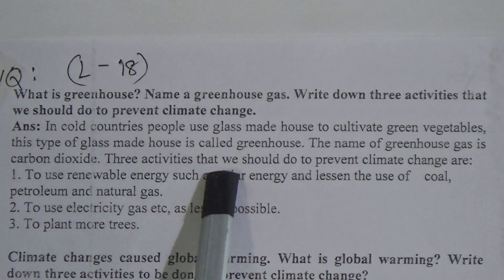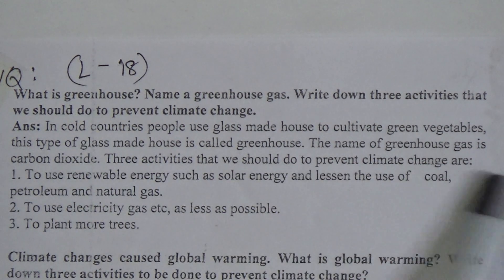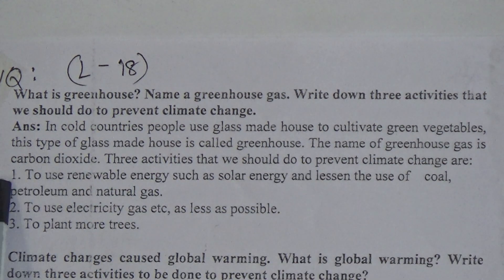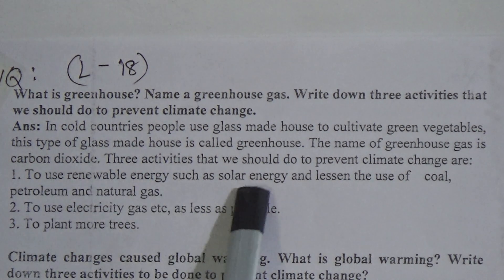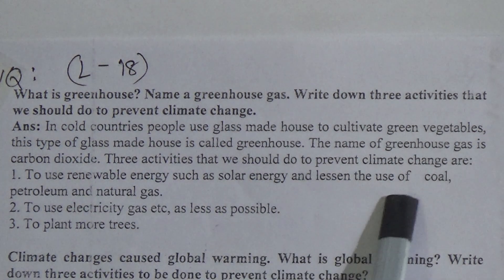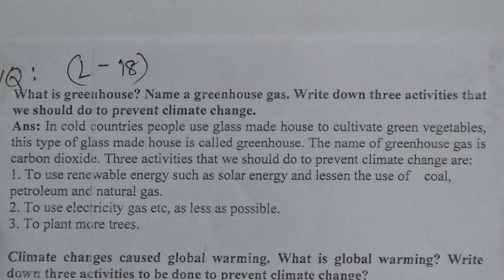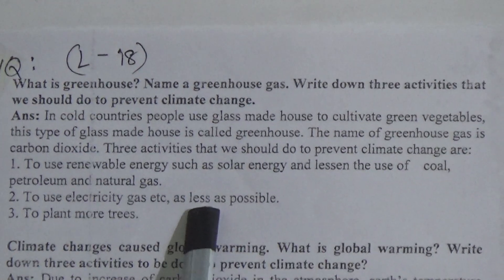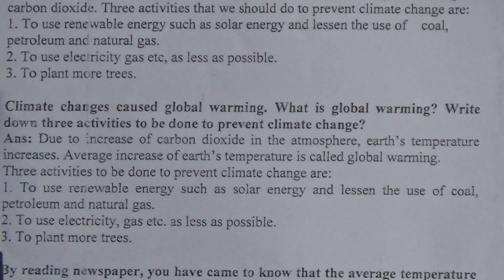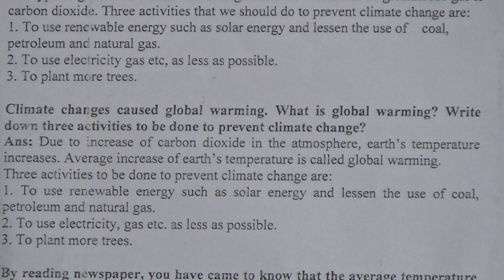Three activities that we should do to prevent climate change are: first, to use renewable energy such as solar energy and lessen the use of coal, petroleum and natural gas; second, to use electricity and gas as little as possible; and third, to plant more trees.